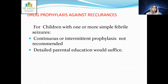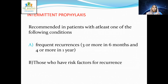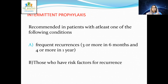Intermittent prophylaxis is recommended when: febrile seizures recur frequently — three or more in six months, or four or more per year — or in patients with high-risk factors for recurrence. The preferred drug is clobazam at 0.8 to 1 mg/kg/day in two divided doses.